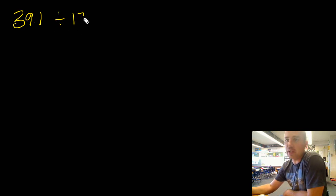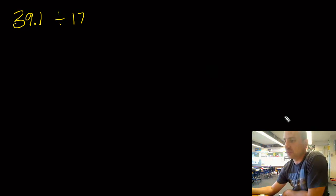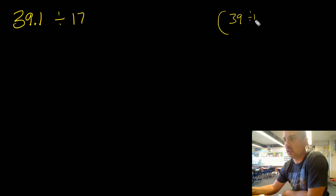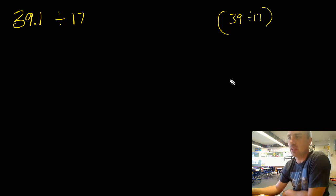Let's take a look at problem one: 39 and 1 tenth divided by 17. So what we know about dividing — if this were just 39 divided by 17 — what would we do? We would round and estimate.